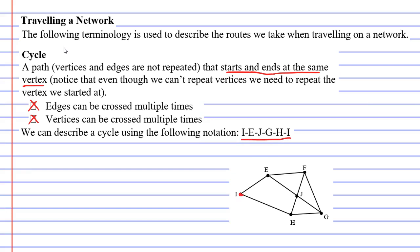We start at I, then go to E, then to vertex J, then to G, then to vertex H, and then all the way back to vertex I. You'll notice that we do not cross any edges more than once. There is one vertex that we cross more than once — technically vertex I — because we started at it and ended at it. So there is an exception for a cycle: we can cross one vertex more than once, but that is the one we start at.